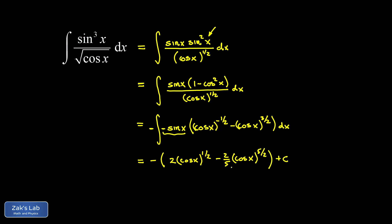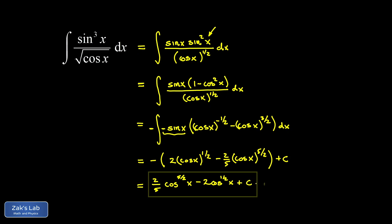Of course, we add an arbitrary constant. Then we clean things up by distributing a factor of negative one across the terms. The final answer is two fifths cosine to the five halves x, minus two cosine to the one half x — or you can write it as square root of cosine x — plus C.